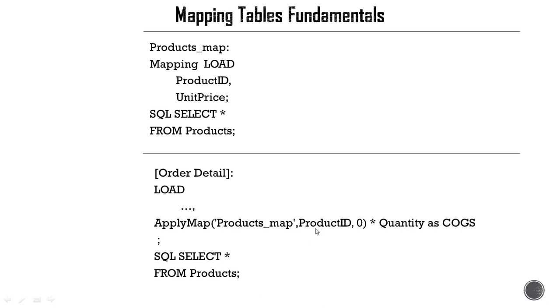The reason is that even if the key field name in the order table was different than the key field in the Products_map, since the mapping table requires that the key field is the first field, implicitly the field from the target table will get mapped to the first field in the mapping load, and if the value matches, then the row will get fetched into the fact table.